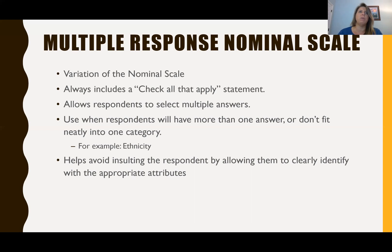Multiple response nominal scales are also used when we're trying to understand all the categories that might apply. So for example, we could ask a question, what stores do you visit in the local mall, and we can make it multiple response nominal by having a list of all the stores available and letting them check all that apply.